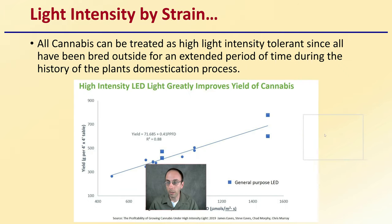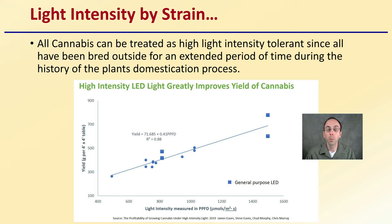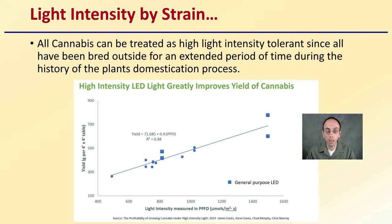So light intensity by strain. All cannabis can be treated as high light intensity tolerant, since all have been bred outside for an extended period of time during the history of the plant's domestication process. Because this is a recently brought-inside plant but largely an outdoor-grown plant, it has been bred to handle the intensities of natural sunlight, which typically is a lot higher than what plants experience in an indoor environment. We can see light intensity increasing and yield also increasing.